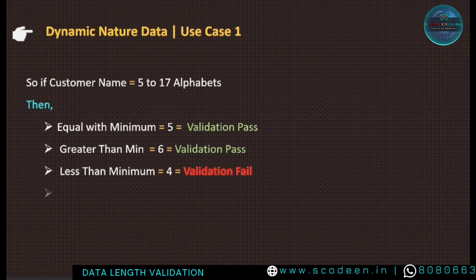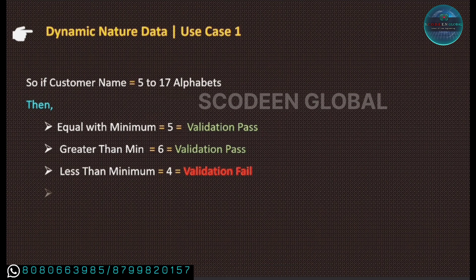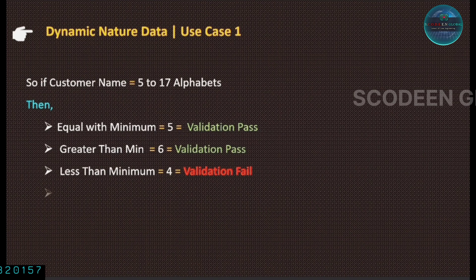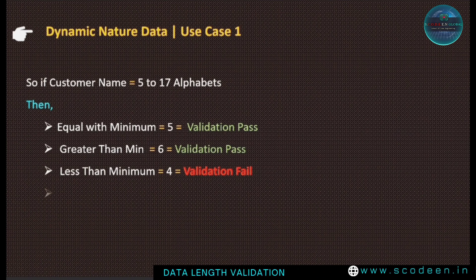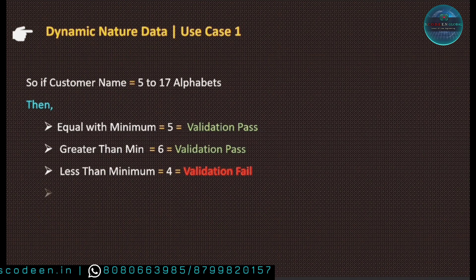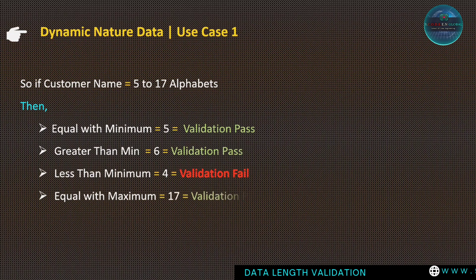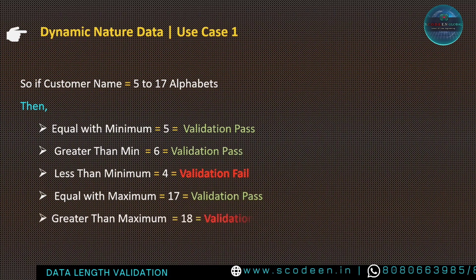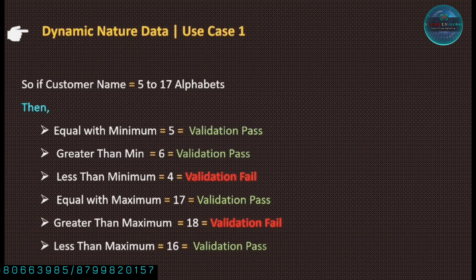As an end user, if I enter a name with length equal to 4 in any application, the application must stop me — an error message must be displayed. If validation fails, that means our code is perfect and our testing is perfect. Equal with maximum — that is 17 — validation must pass. Greater than maximum — that is 18 — validation must fail; this is also a negative condition. Less than maximum — that is 16 — must pass.